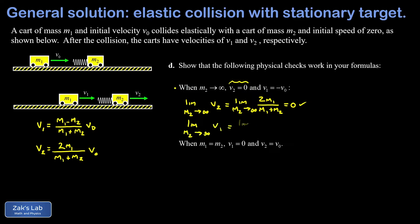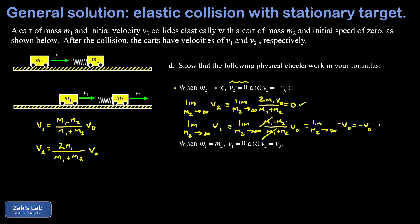For the limit as m2→∞ of v1 = (m1 minus m2)/(m1 plus m2)*v_naught: with m2 infinite, m1 is negligible in both numerator and denominator, leaving negative m2/m2 = negative 1, so v1→negative v_naught. The mass is reflected with the same speed as its initial speed, conserving kinetic energy. Both limits check out.